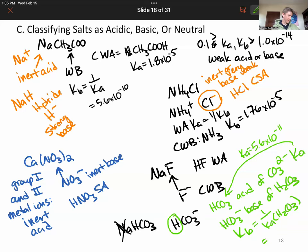1.0 times 10 to the minus 14 divided by 4.3 times 10 to the minus 7, and I get 2.3 times 10 to the minus 8.